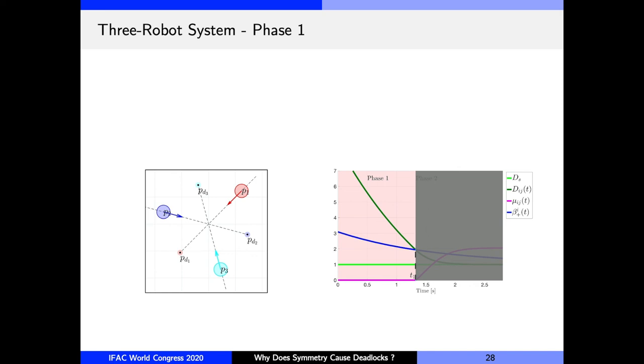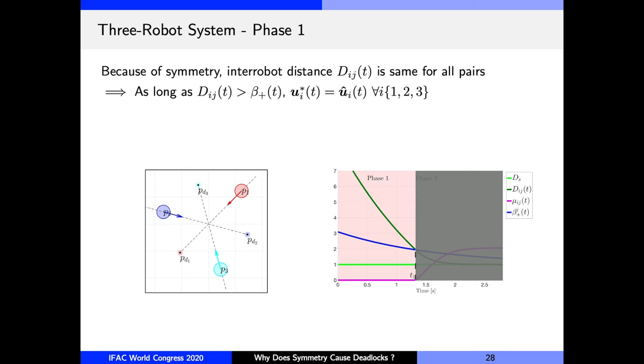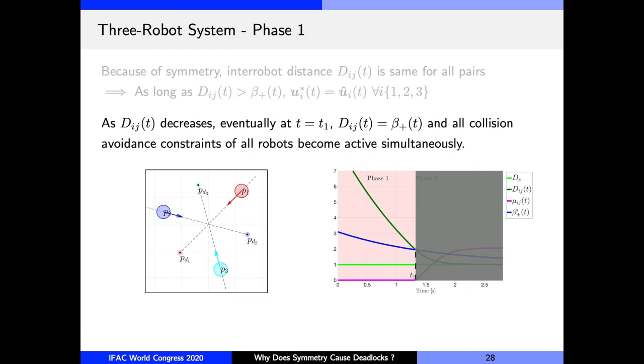Again, we can assume that this pattern continues for a finite time. That is, the inter-robot distance d(t), that is the dot-green curve, remains greater than the critical distance β, that is the blue curve, so that all robots continue to use their nominal controllers. But eventually, at time t_1, d(t) becomes equal to β, that's when the collision avoidance constraints of all robots become active. Now the interesting thing is that this happens simultaneously for all robots, and that's because of the geometric symmetry and identical proportional gains that we assume. This marks the beginning of phase two.